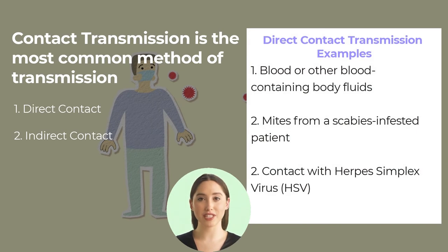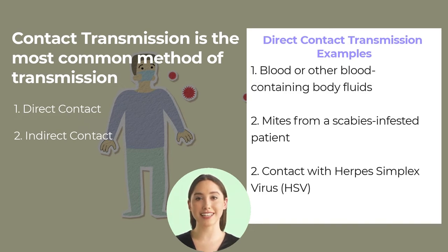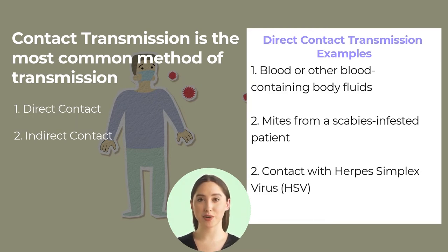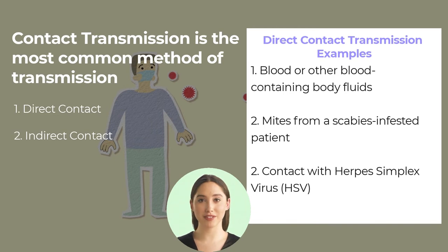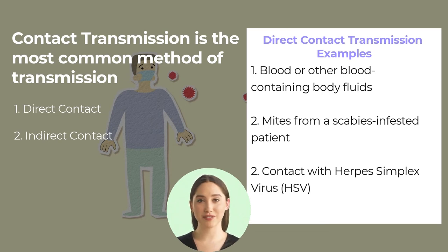Examples of direct transmission between patients and healthcare personnel include: blood or other blood-containing body fluids from an infected patient directly entering a caregiver's body through contact with a mucous membrane or breaks in the skin; mites from a scabies-infested patient transferred to the skin of a caregiver through direct, ungloved contact; and a healthcare provider developing a sore on a finger after contact with herpes simplex virus when providing oral care to a patient without using gloves.